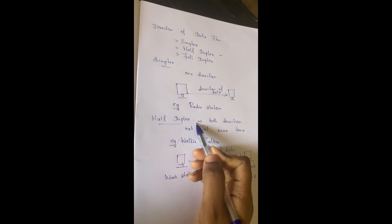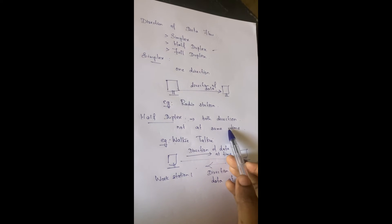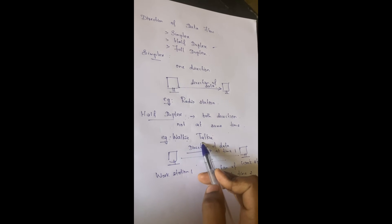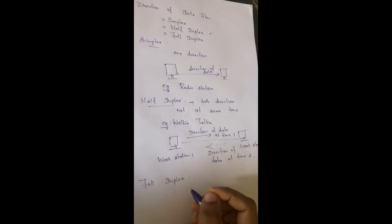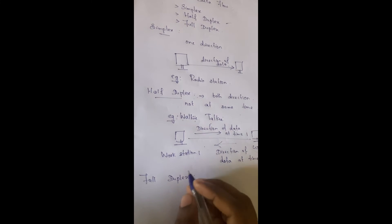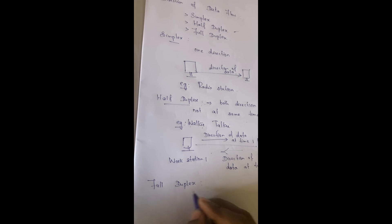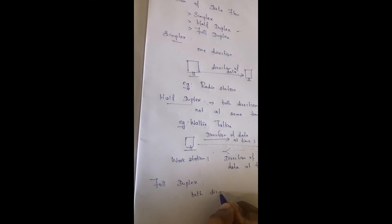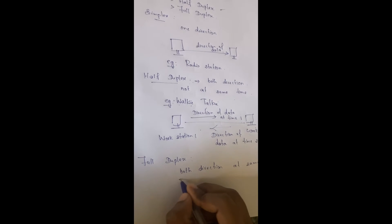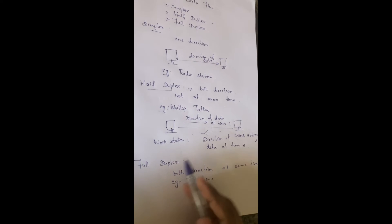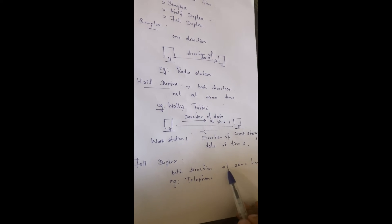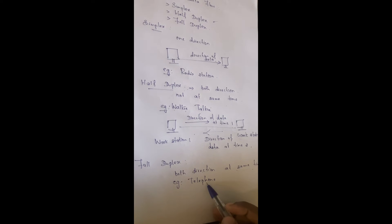So in half duplex, the information can be transmitted in both directions but not at the same time. Example is walkie-talkie. Next one is full duplex — here data is able to transmit in both directions at the same time. Telephone is the example for full duplex.